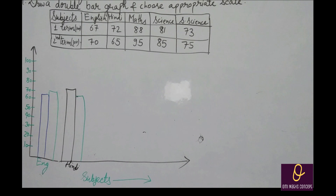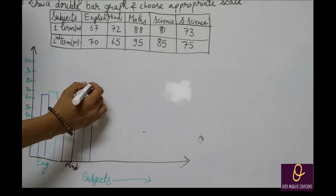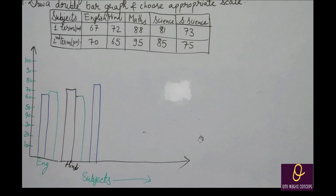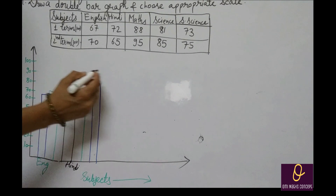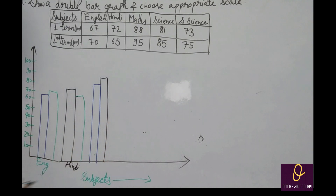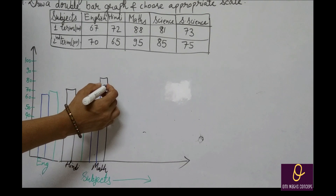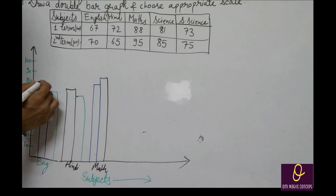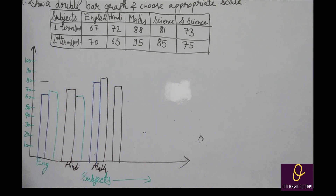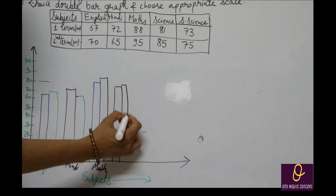Maths में first term 88, second term 95. Science में first term 81, second term 85 — इसमें भी improvement है. Social science में first term 73, second term 75. Graph pencil से draw करना है, sketch नहीं. First term के सब bars एक ही color में और second term के सब bars अलग color में करेंगे.